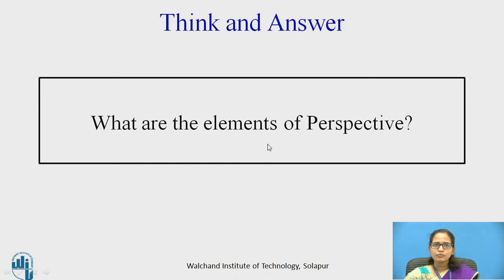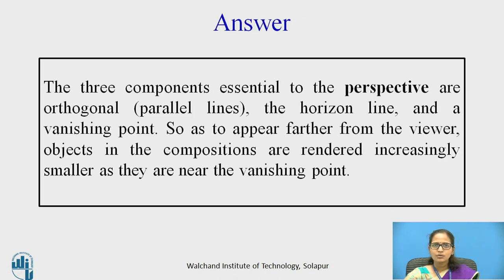Pause the video and try to answer: what are the elements of perspective? The three components essential to perspective are the orthogonal lines (the parallel lines), the horizontal line, and a vanishing point. Objects in the composition are rendered increasingly smaller as they near the vanishing point, to appear farther from the viewer.